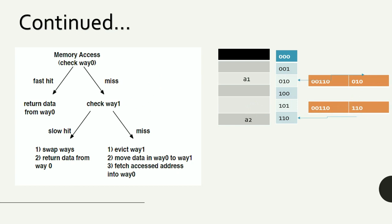If the data is present in that second cache block, it results in a slow hit, and the data is swapped between location A1 and A2 so that if the same cache block is accessed again, it results in a fast hit. If the data is not present there either, the data is evicted and fetched from main memory. The retrieved data is placed in A1, and the data previously in A1 is swapped to A2, so that future accesses result in a fast hit.